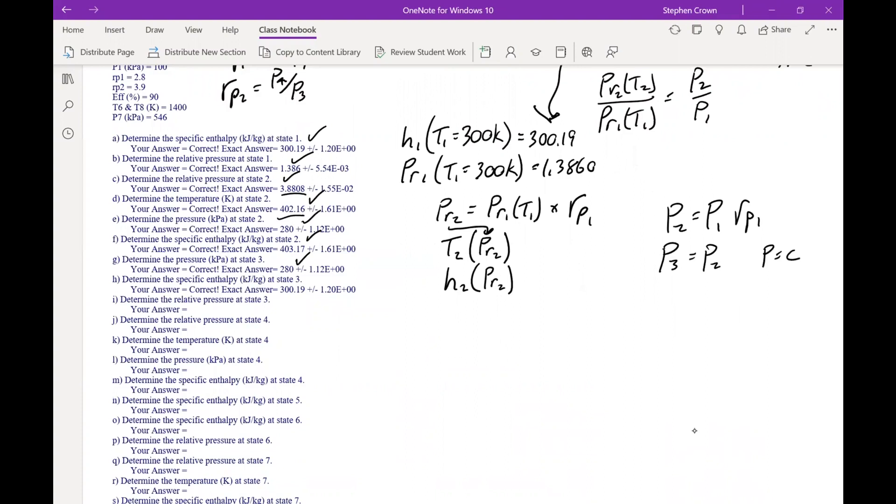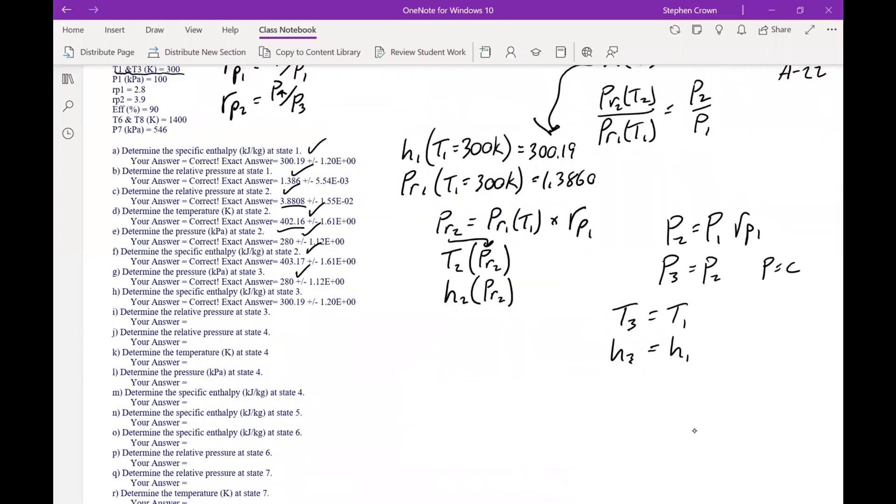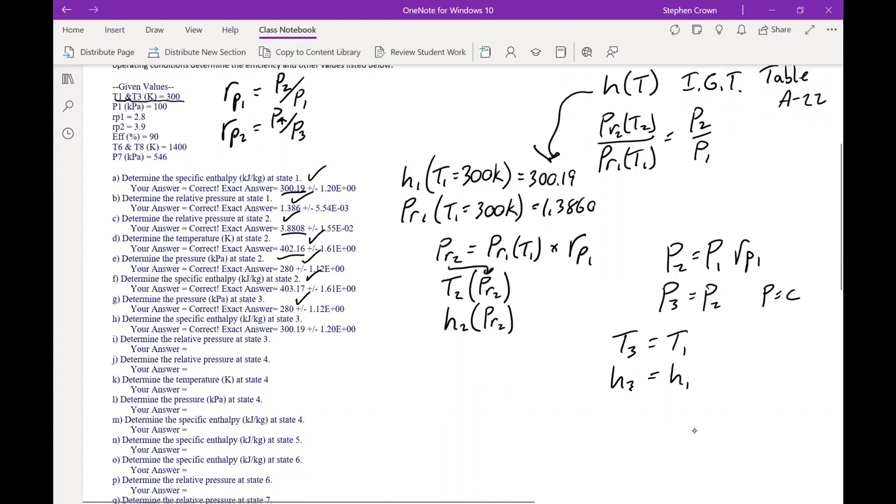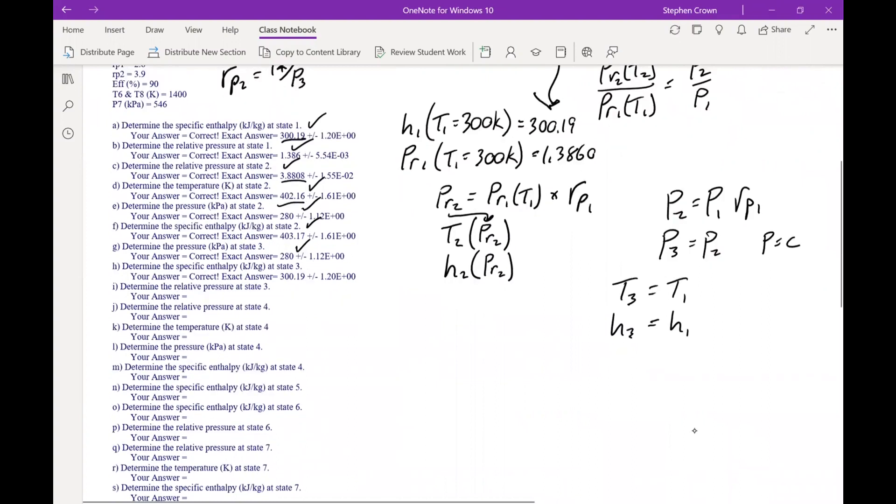Then we move on to the temperature. The temperature at state 3 is the same as the temperature at state 1 in this problem. It doesn't have to be. But since the temperatures are the same, the enthalpies will be the same. So H3, in this case, will equal H1. So we don't need to find it again. We could look it up again. If in the problem I had it cooled down to 310, then it would be a different enthalpy, a different temperature.